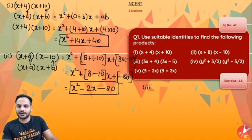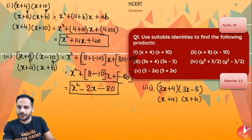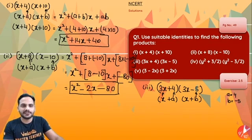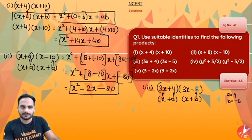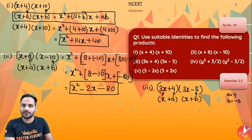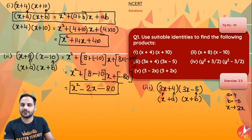Third one is 3x plus 4 into 3x minus 5. Now here we can see it is of the same form x plus a into x plus b where a is 4, b is minus 5, and in place of x we have 3x. So in this identity wherever I have x I will write 3x. So 3x plus 4 into 3x minus 5 will become 3x whole square plus a plus b.